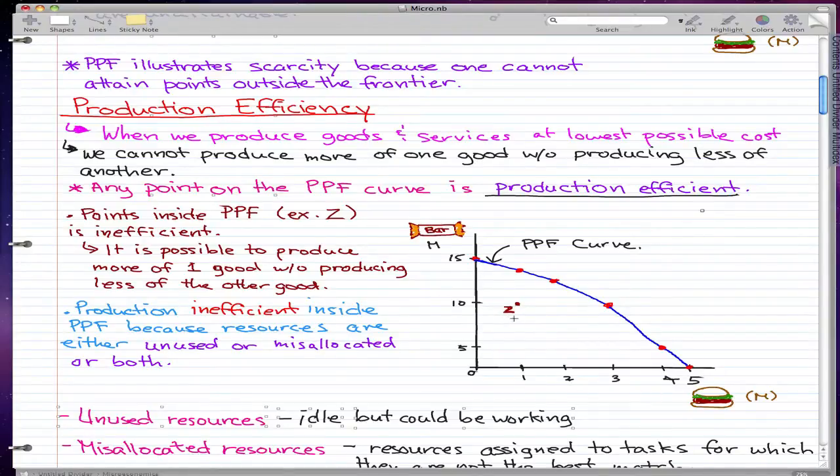...is inefficient because it is possible to produce more of one good without producing less of the other good. By that I mean we can increase our production to, let's say, 15 million bars and 2 million burgers. That is when we are producing more of both goods without producing less of the other good.